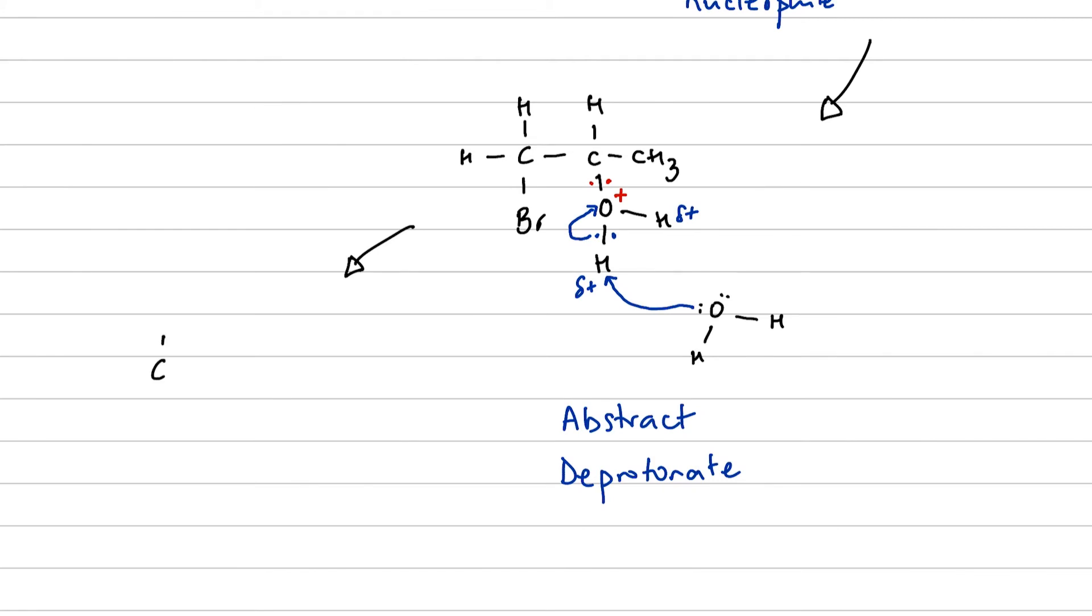So we're going to end up with our product: bromine, carbon, hydrogen, methyl group, OH group. We've now got an alcohol plus H3O+, which is known as an oxonium ion.